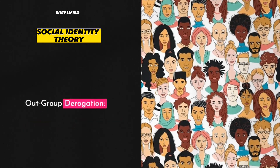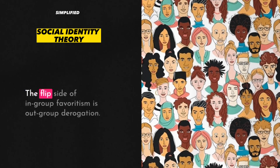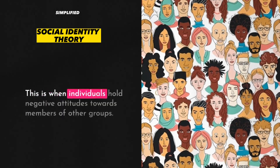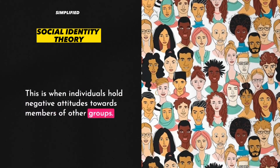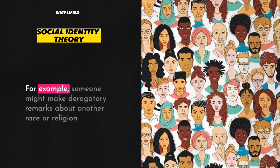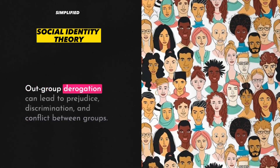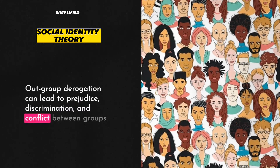4. Out-group Derogation. The flip side of in-group favoritism is out-group derogation. This is when individuals hold negative attitudes towards members of other groups. For example, someone might make derogatory remarks about another race or religion. Out-group derogation can lead to prejudice, discrimination, and conflict between groups.